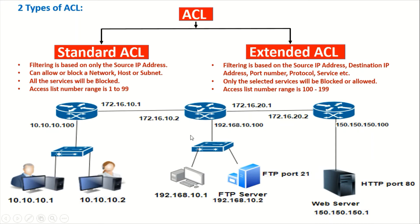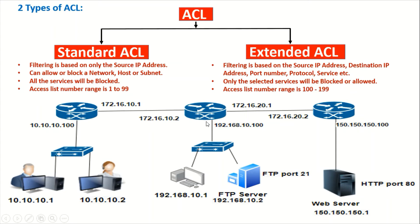Standard ACL is a very simple method. Using this method, it is common to all services — meaning if I permit a network, access is open to all services in that network: FTP, TFTP, SMTP, web server, and so on. I cannot specifically block one service and allow another. It works only based on source IP address — either you permit or deny the IP address of a user or a network, and that applies to all services.